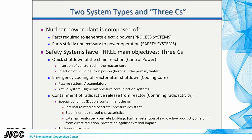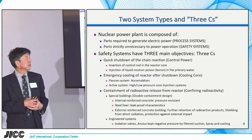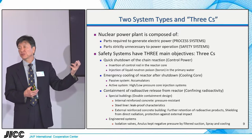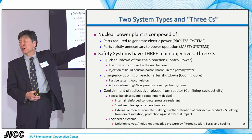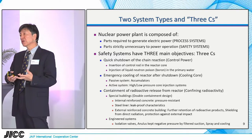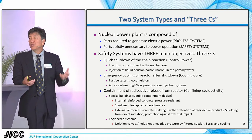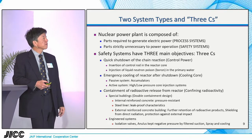The first C is control power — the quick shutdown of the chain reaction. This is achieved by insertion of control rods in the reactor core, or reactor SCRAM. The second method is injection of liquid neutron poison — usually boron is used. This poison is put into the primary water, circulates the reactor system, and since boron is a good neutron absorber, the reactivity in the reactor core is reduced, meaning reactor power decreases.